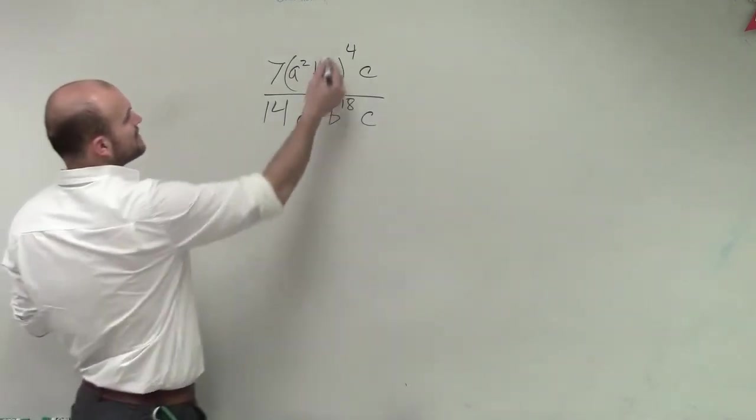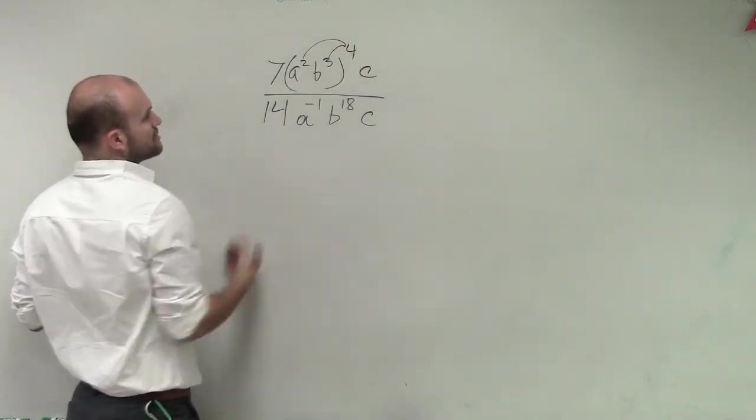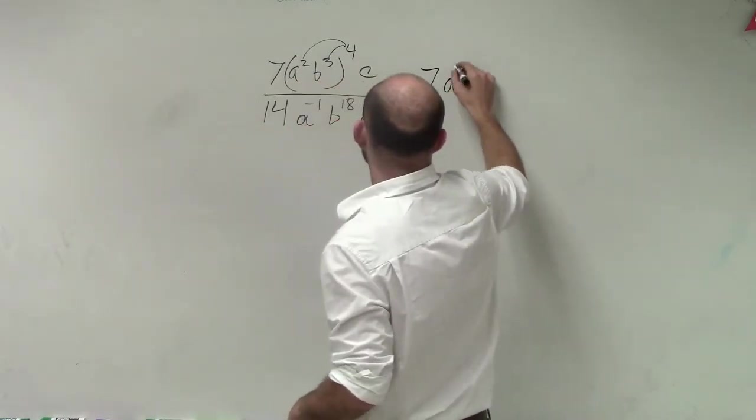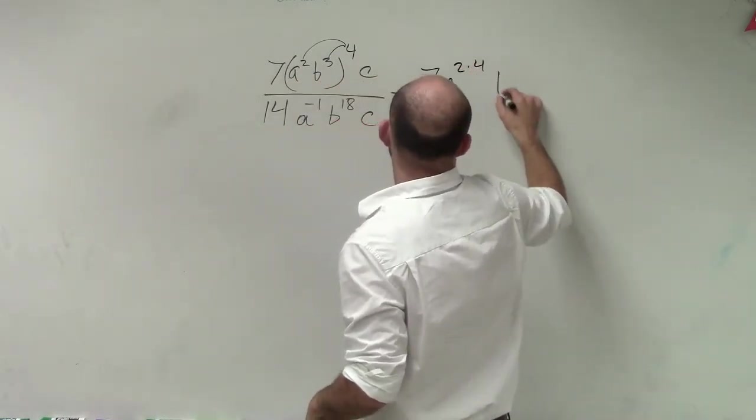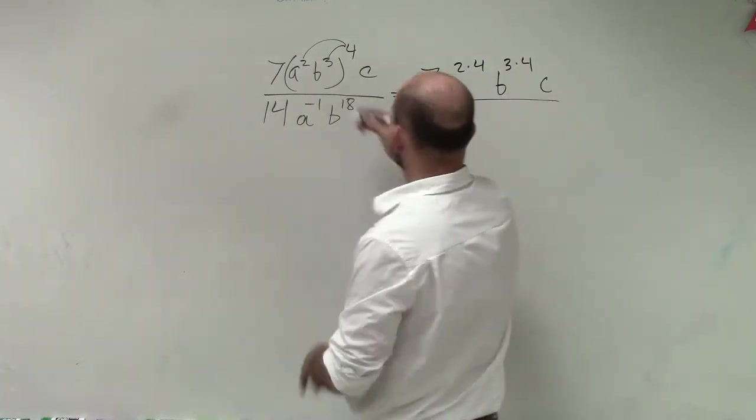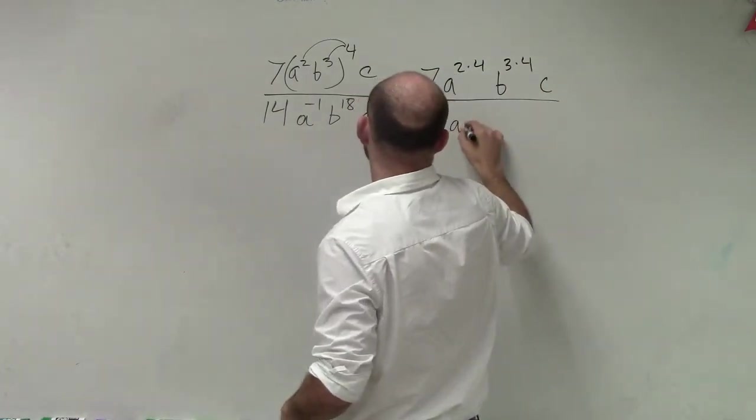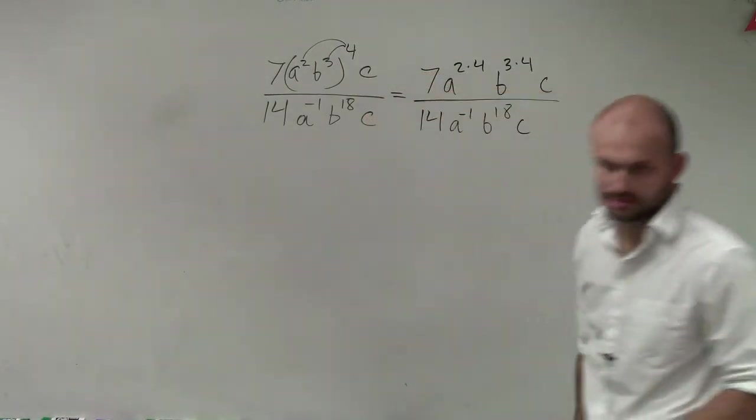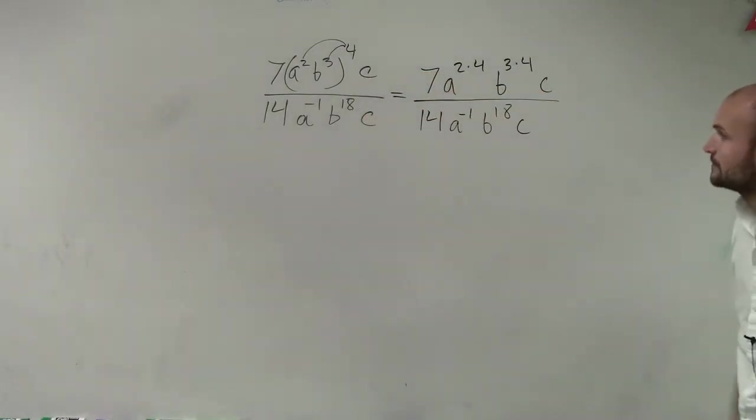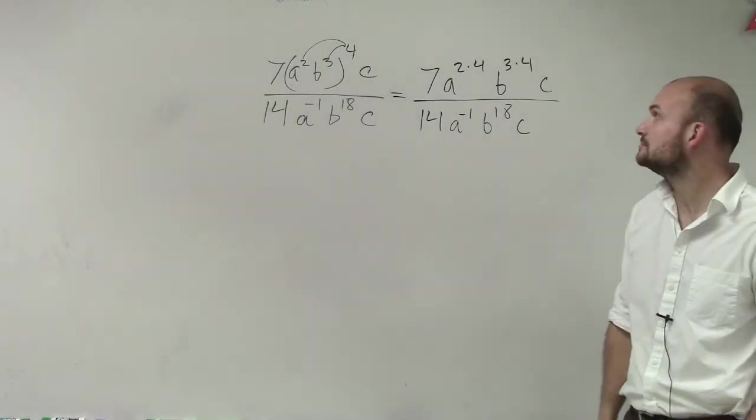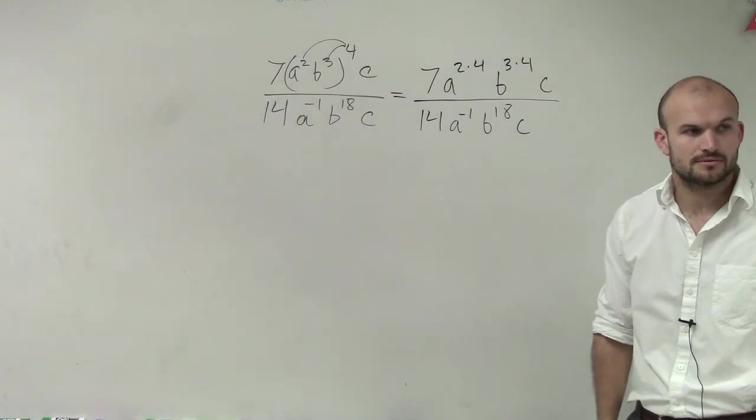So if I need to get rid of my parentheses, I need to distribute this through, right? So therefore, this is going to get 7a to the 2 times 4, b to the 3 times 4, times c, all over—there's nothing I can do in the denominator, right? Well, let's just show it and we'll go through it. So you guys see what we have here? Do you guys see how I got rid of the parentheses? Yes? No? Maybe so?